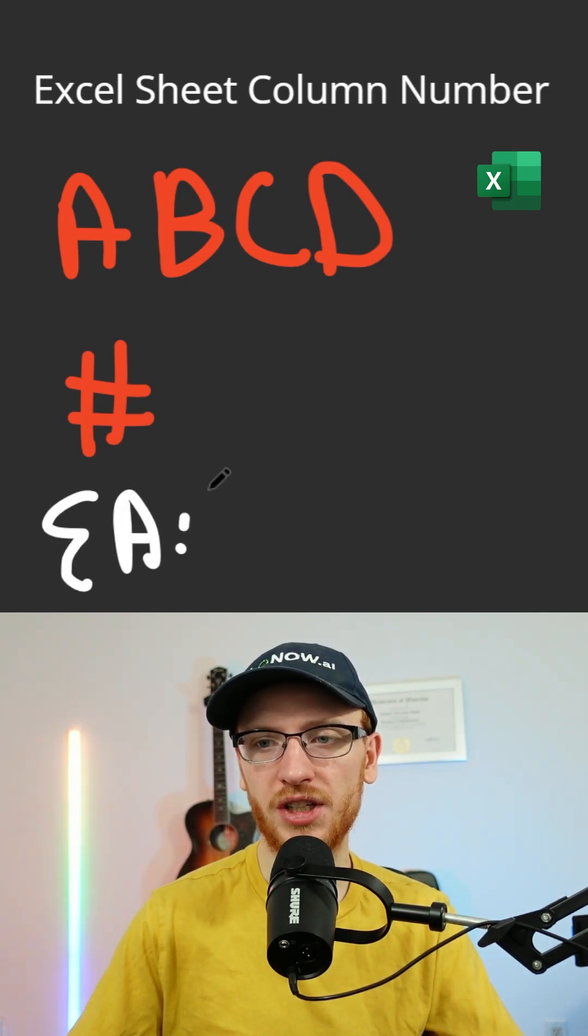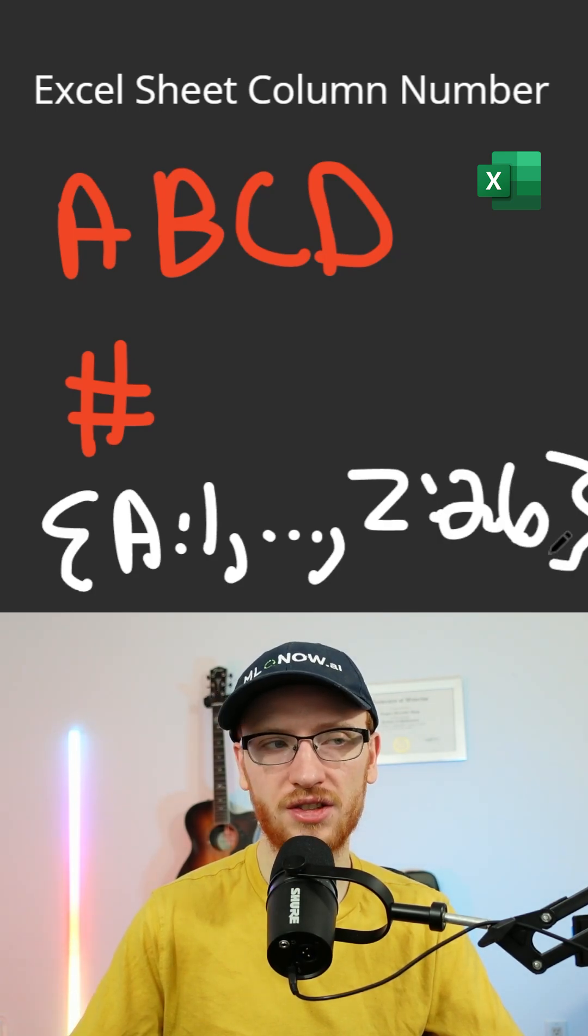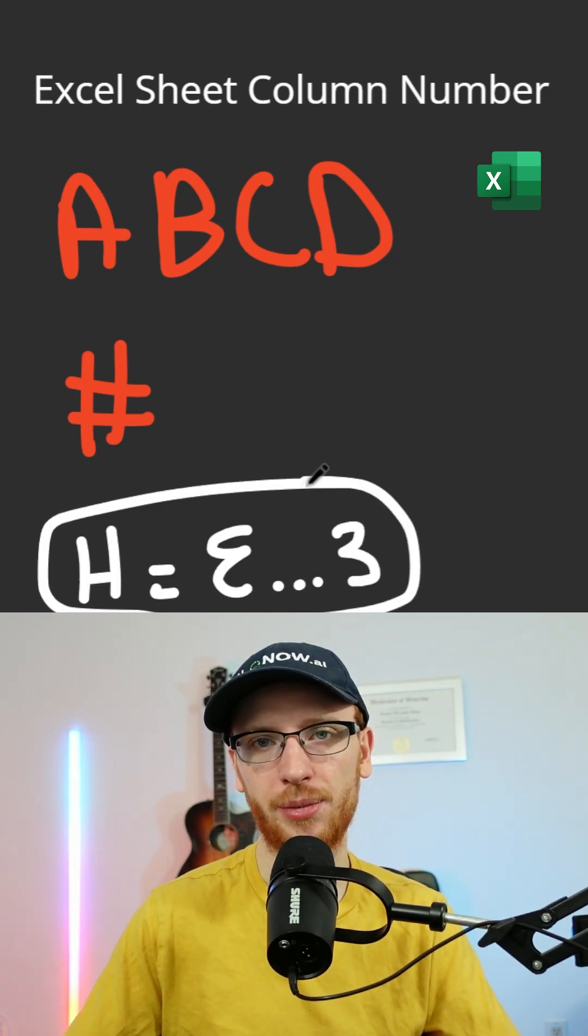We'd start with a hash map that mapped each letter to its corresponding value, all the way up until Z is 26, and for short I'll just call that hash map H.